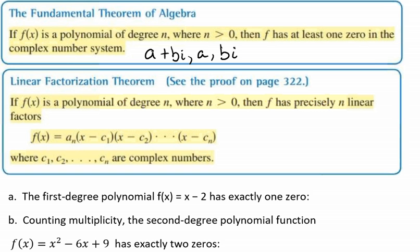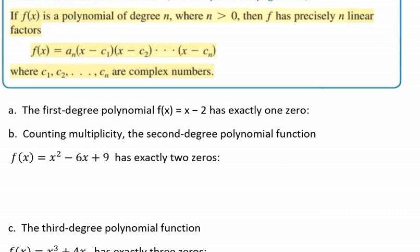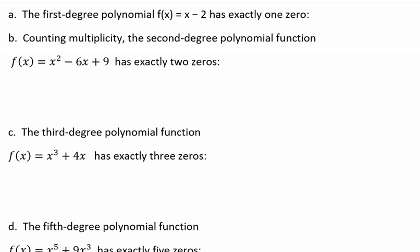Let's take a look at this example. The first-degree polynomial f(x) = x - 2 has exactly one zero. It's a first degree polynomial, so it has exactly one zero. That zero is x = 2, because we could take this and set it equal to 0.